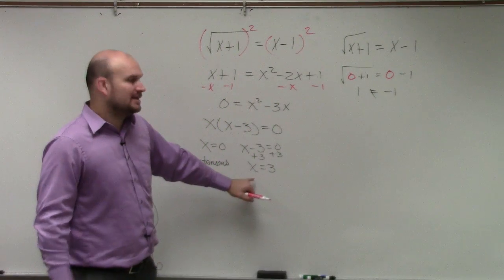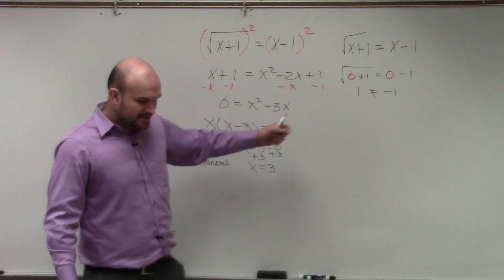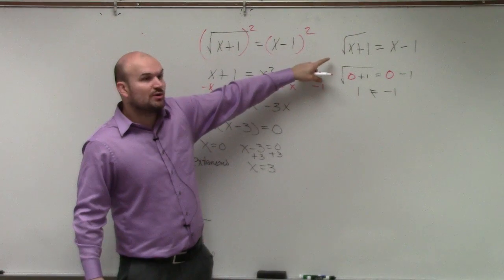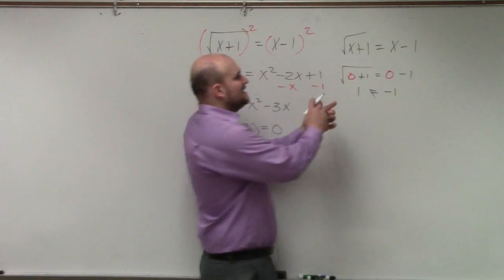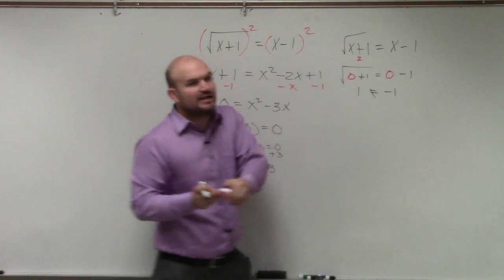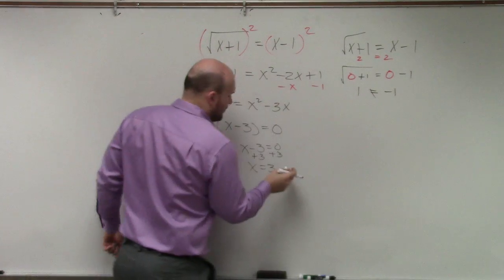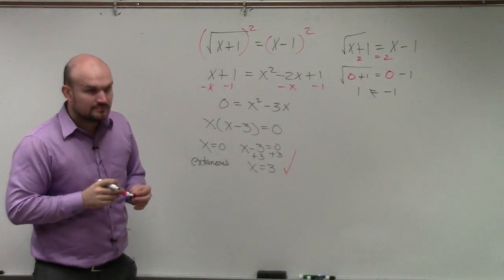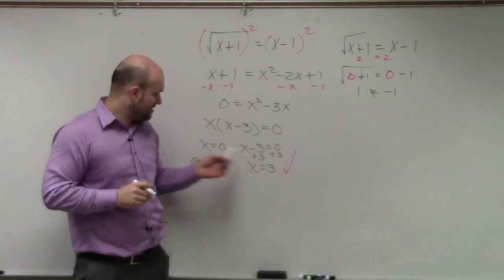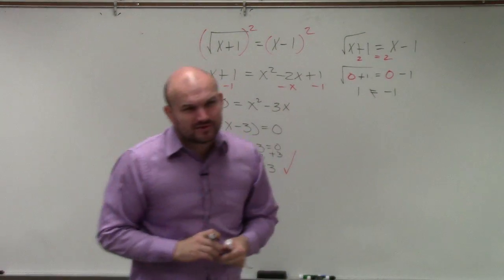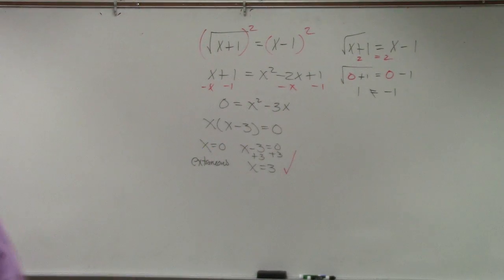Now let's check x = 3. 3 plus 1 is 4, and the square root of 4 is 2, so the left side is 2. 3 minus 1 is also 2. That is verified — x = 3 is a valid solution, while x = 0 is extraneous. That's what extraneous solutions are and how to find them — you just have to check your answers.